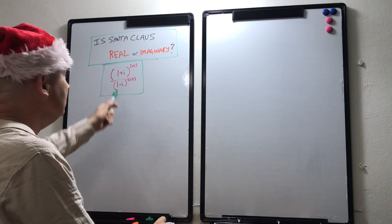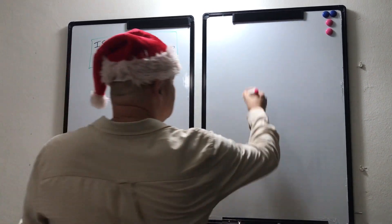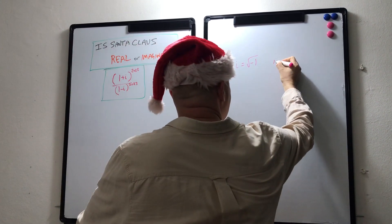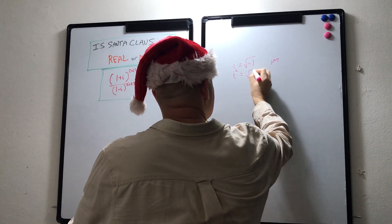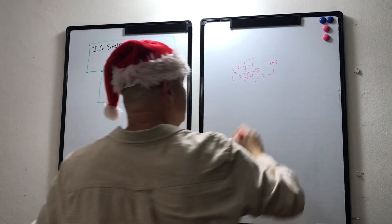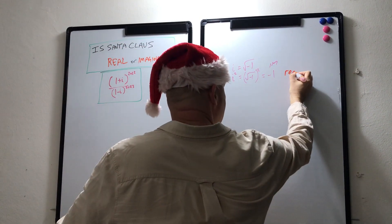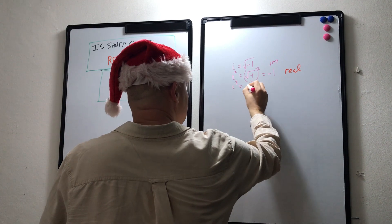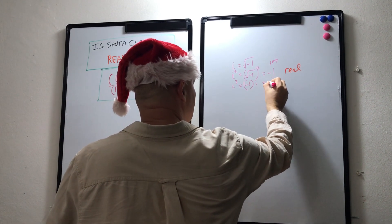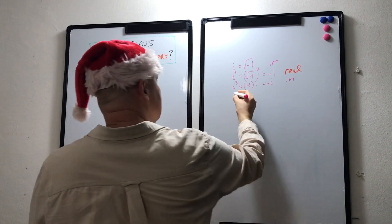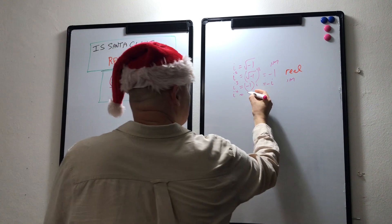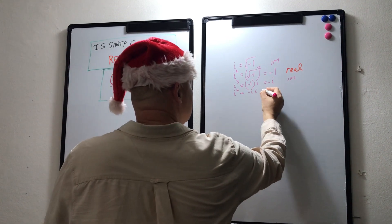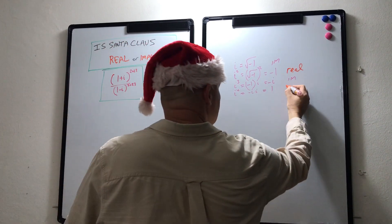To evaluate this we first need to look at i and its various powers. So i equals the square root of minus 1, which is an imaginary number. i squared is (√-1)² which is minus 1, which is real. i cubed is i² times i, which is minus 1 times i, which is minus i — imaginary. And i to the 4 is i³ times i, which is minus i times i; since i times i is minus 1, we get minus times minus 1 which is 1 — real.